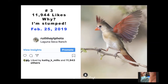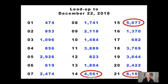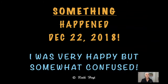December 22nd was when my account went sort of crazy. I've got a chart showing week by week what my numbers did — the first through the seventh, eighth through fourteenth, and fifteenth through the twenty-first — and I've circled the ones that accrued more than 4,500 likes. There's no rhyme or reason to it; the numbers go up and down and never consistently rise. Something did happen on December 22nd 2018 and I was very happy but somewhat confused.